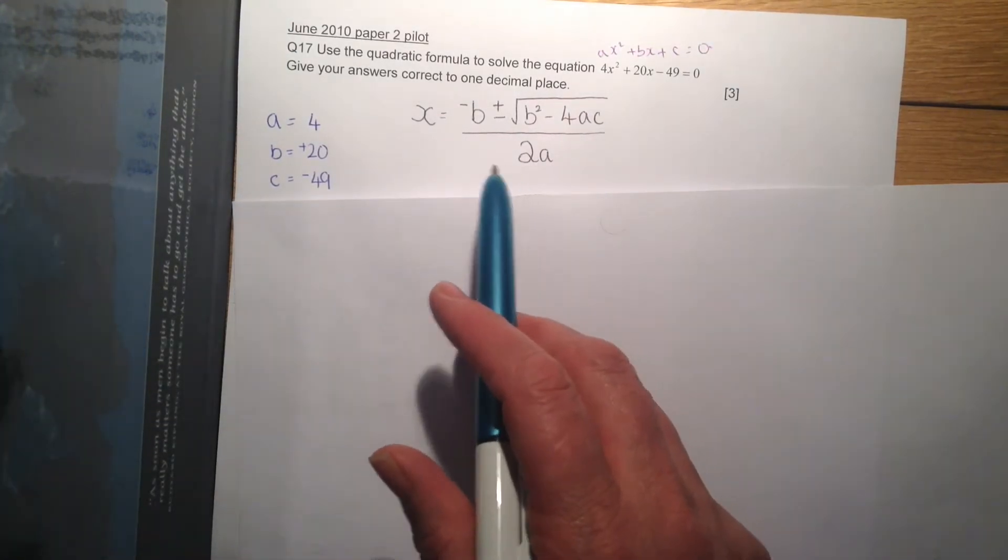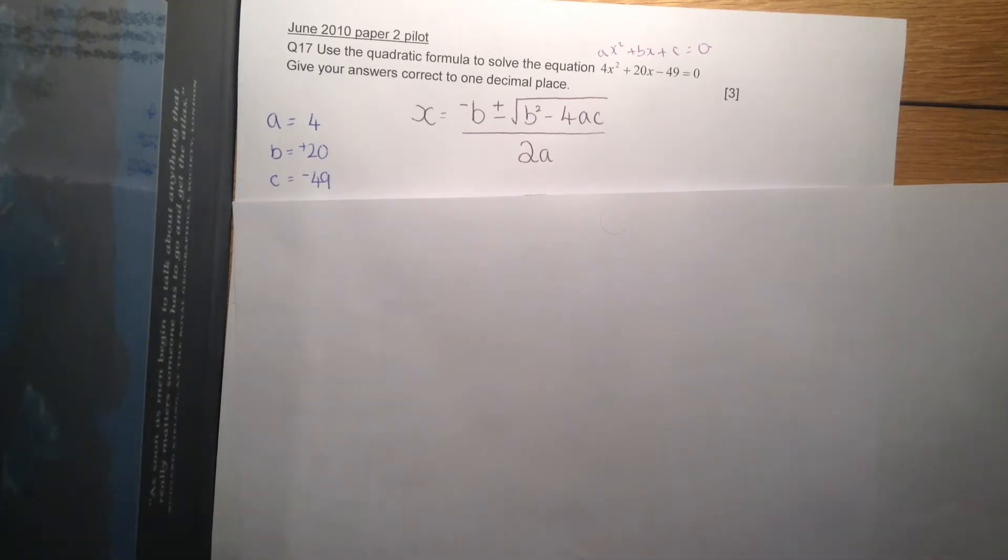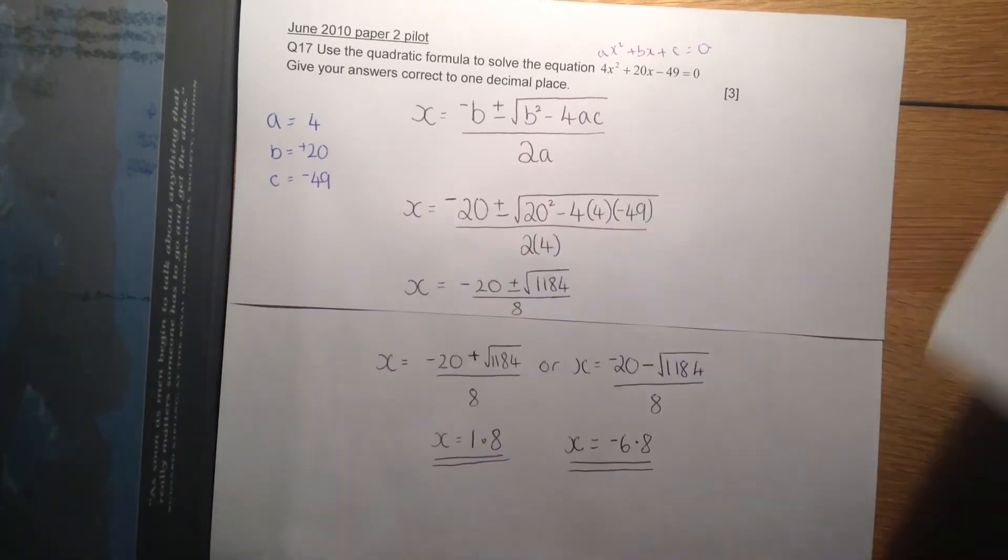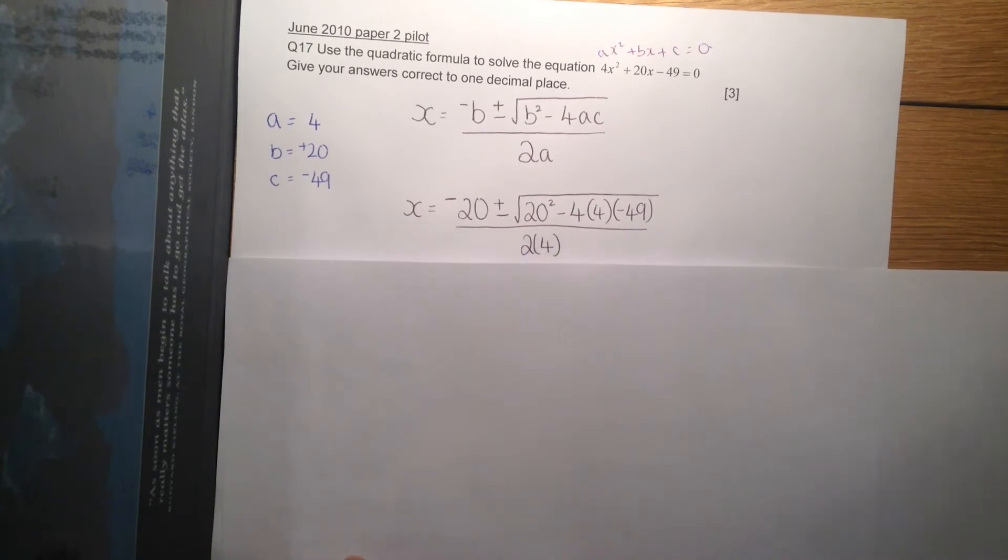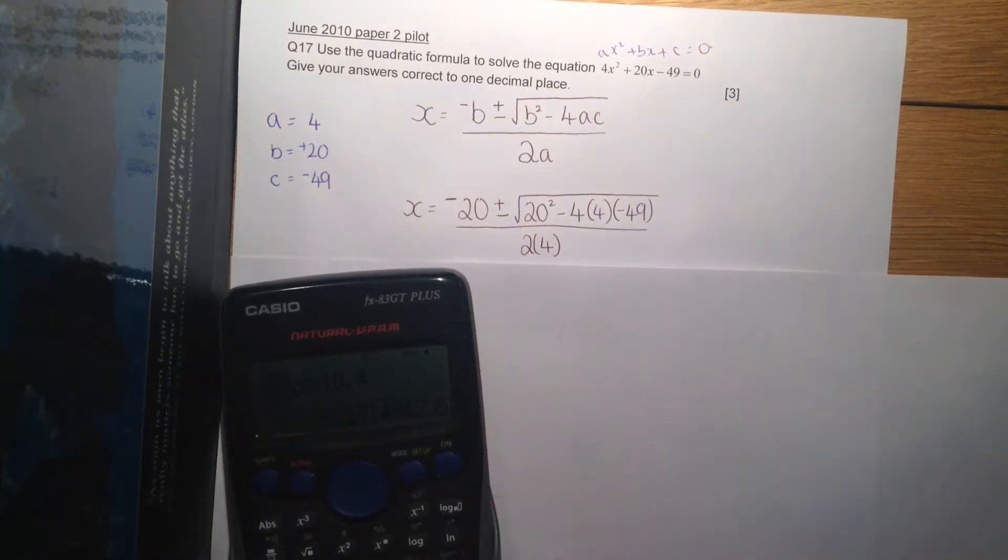So there's our formula and there's our values we're going to use. Now we substitute it all in. And we're going to work out the little bit underneath the bracket first of all.